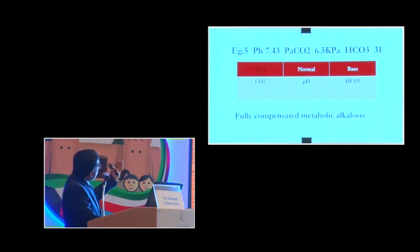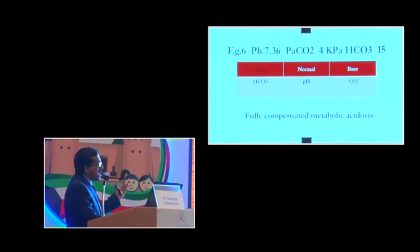Example number 5, pH of 7.43, PaCO2 of 6.5, and bicarbonate of 31. The pH is in the normal column, the CO2 is in the acidic column, and the bicarbonate in the base column. This is a fully compensated metabolic alkalosis. So it is very easy to make an interpretation in any emergency situation. With this, I stop. Thank you.